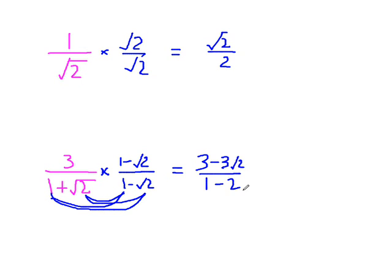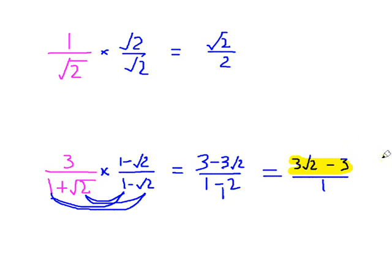In this case, we end up with minus one on the denominator, so we should multiply top and bottom by minus one to get rid of that. Multiply the top by minus one — changes all the signs round. And the denominator, one minus two, but we multiplied it by minus one, so that just becomes one. And we wouldn't even write the over one part. So the answer to this — rationalise the denominator — would be three root two take away three. We could factorise out the three if we wanted.